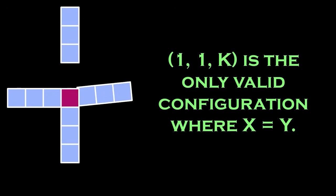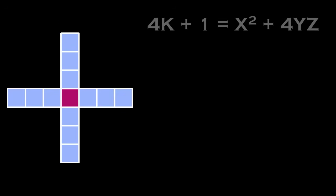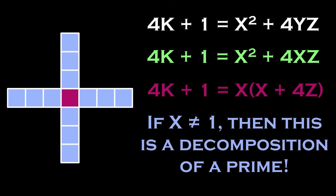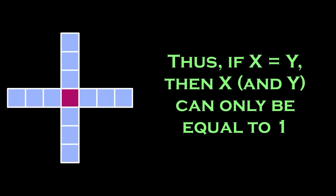Now we'll show that 11k is the only valid configuration. If we take our formula and replace y with x, then we can factor out an x from both terms, leaving x times x plus 4z. Since p is prime, if x is anything but 1, then this would make a decomposition of a prime number, which isn't possible. Thus, if x equals y, then x can only be equal to 1.